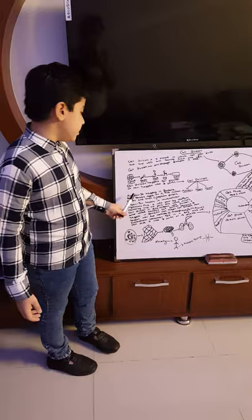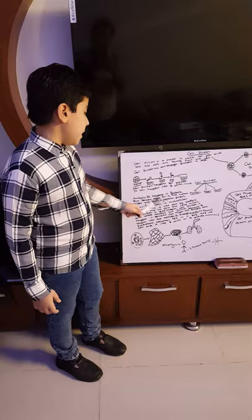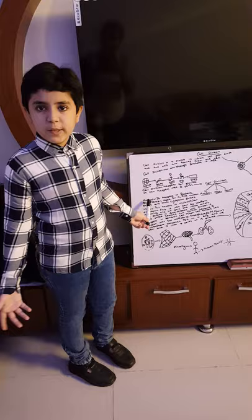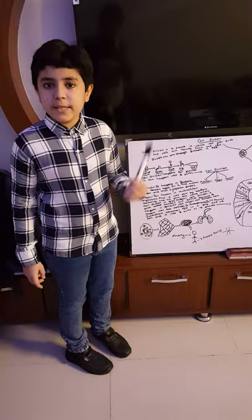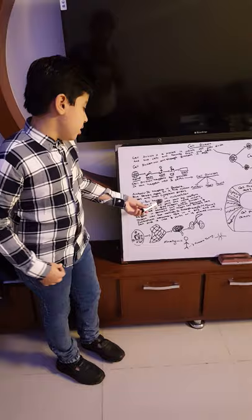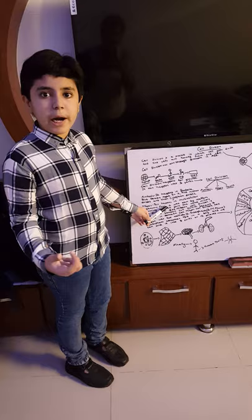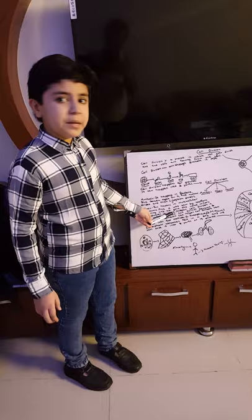Now, mitosis. Mitosis happens in multicellular organisms. Amitosis happens in unicellular organisms that are made up of only one cell, but mitosis happens in multicellular organisms like human beings, which are made up of many cells. It was first seen by Walther Flemming, who gave the name mitosis cell division in 1879.